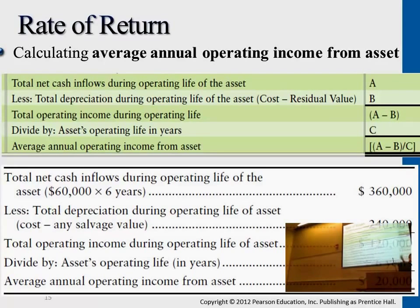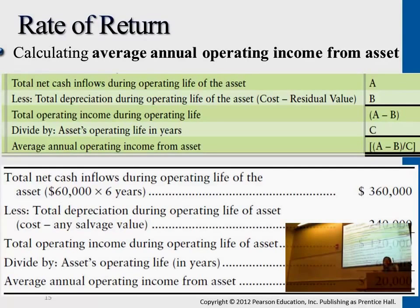This example represents what's in the upper table. A is the total cash flow, $360,000. B is the depreciable cost, $240,000 — the initial cost spent on the asset. At the end of six years the value becomes zero, so you totally depreciate the entire thing. A minus B gives you $120,000, the total operating income for six years. Then you divide by C, which is the lifetime — six years.